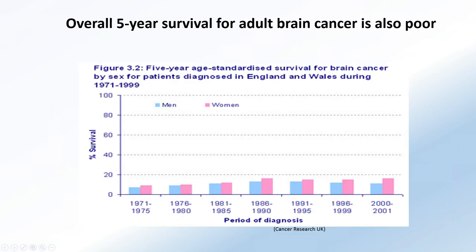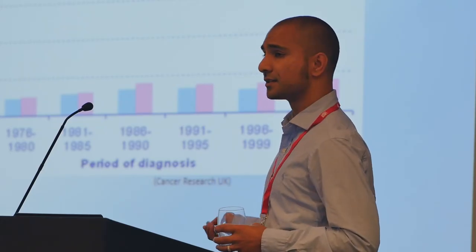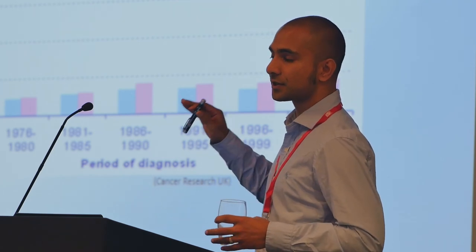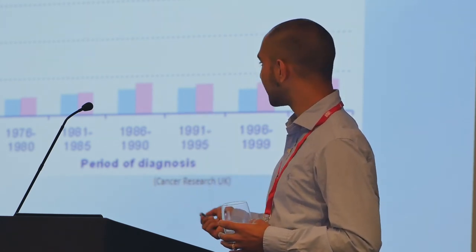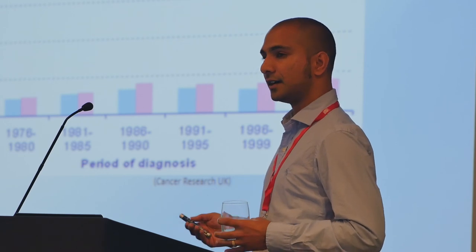It's a pretty dismal picture for adult brain tumors as well. This is all adult malignant brain tumors showing that the overall five-year survival is not only poor, but what you'll notice is this graph goes right back to the 1970s. One of the things that's really disappointing is that we're in an era of huge advances in cancer in general. Despite continuing research and clinical research going on with these tumors - which has increased almost exponentially - 30, 40 years on, we've seen the same outcome in terms of survival.